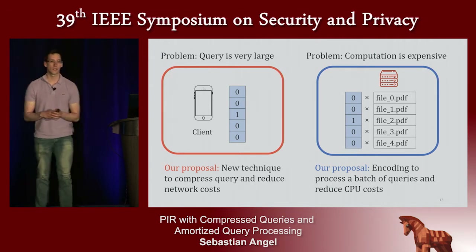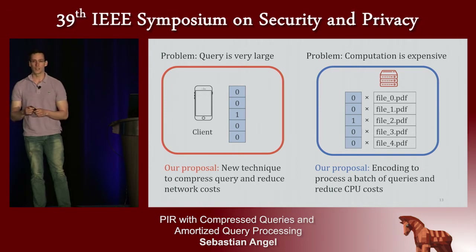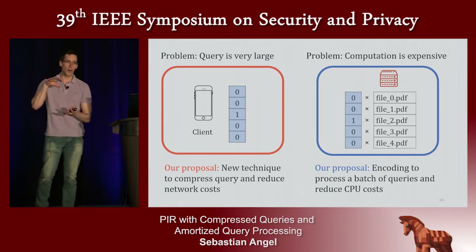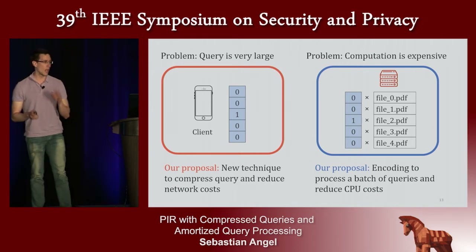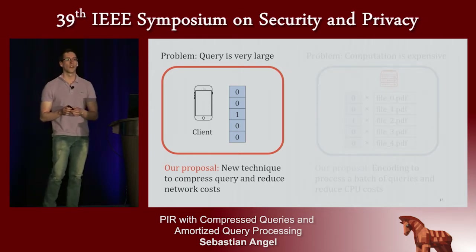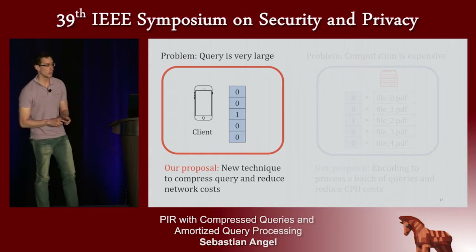In other words, the server gets amortization. If you're familiar with batch codes, our encoding is a relaxation of batch codes — it's weaker, but much more efficient. In this talk, I'm only going to focus on how we do compression. If you're interested in how we do the encoding, please take a look at the paper.